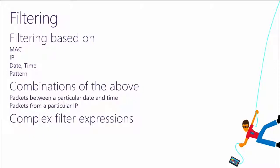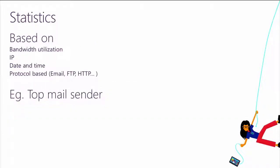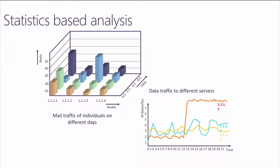Statistics can cover bandwidth utilization and protocol usage. You can see the top email senders — for example, if you're using Office 365 from the admin panel or have Exchange, you can see all of this and get beautiful statistics.